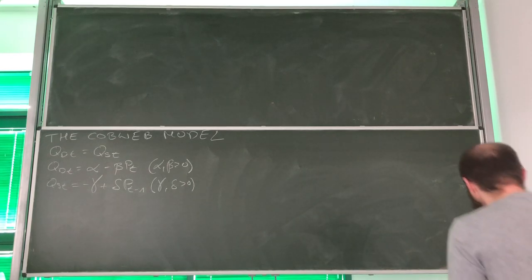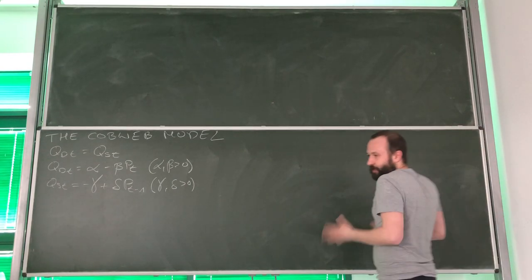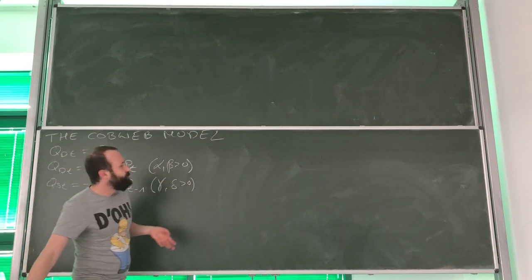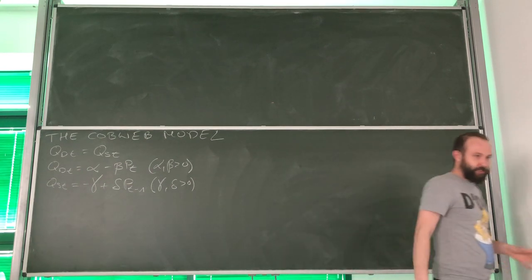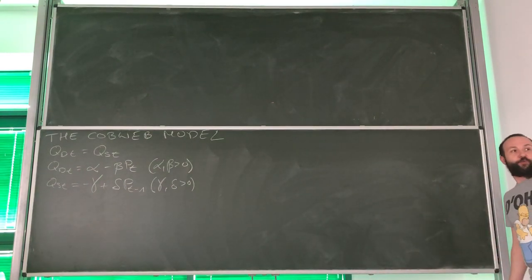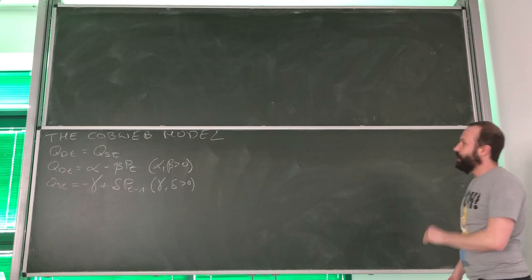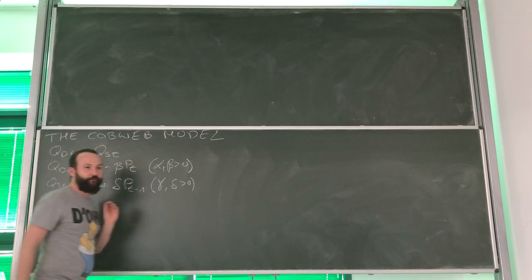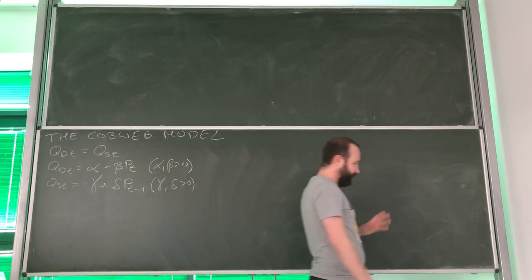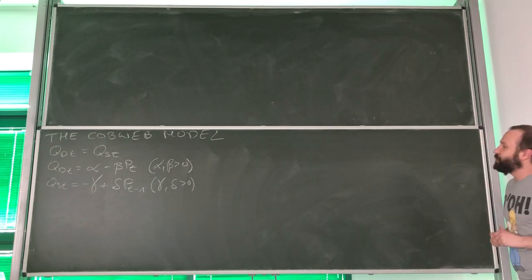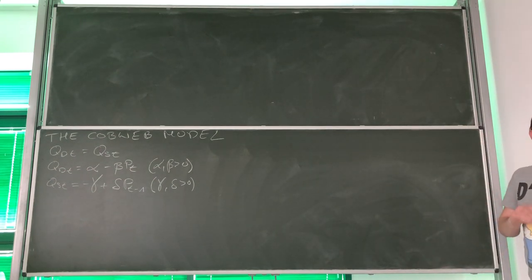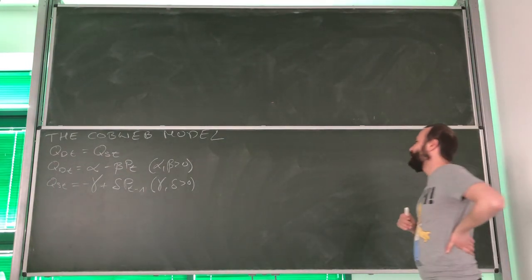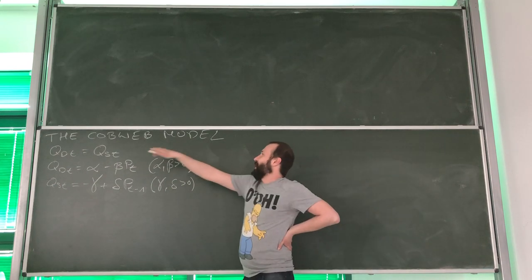Hi. During last week we kind of departed from economics, but for now we are going back to economics and we are going to go through the first application of first order difference equations to economic problems. We are going to explore the market model with lags, or as it is very well known, the cobweb model.